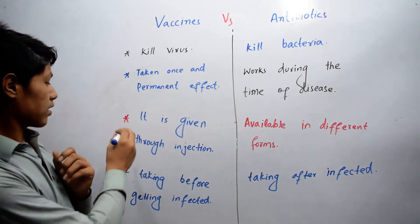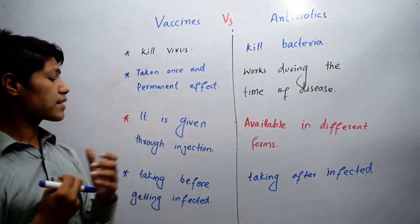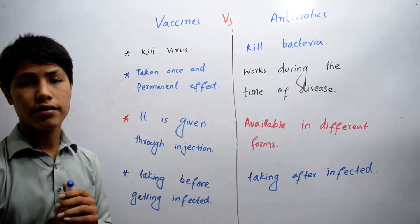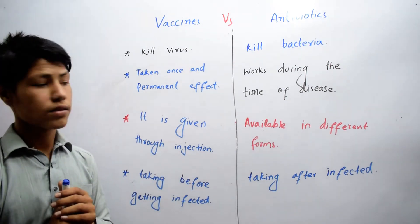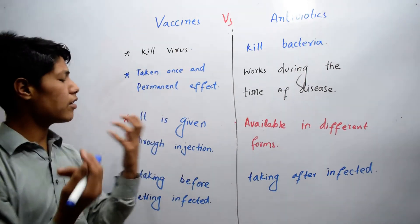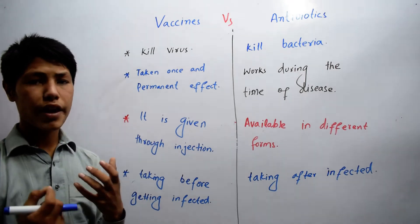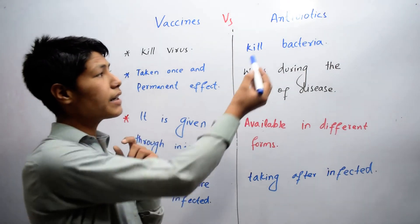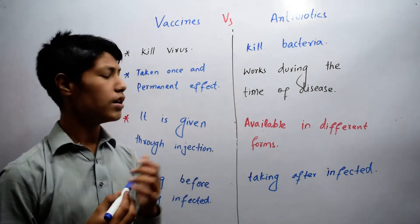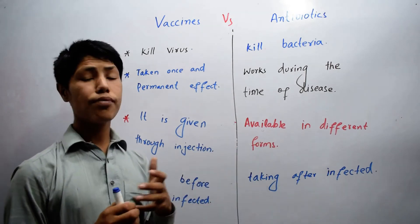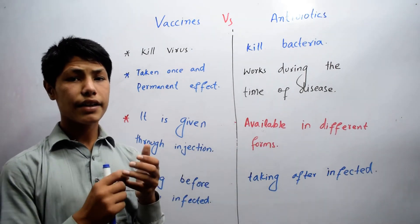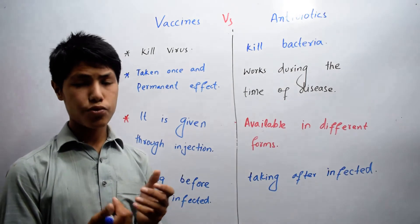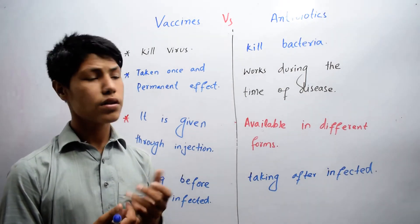The third difference is that vaccines are given through injection, while on the other hand antibiotics are available in different forms like tablets, capsules, etc.